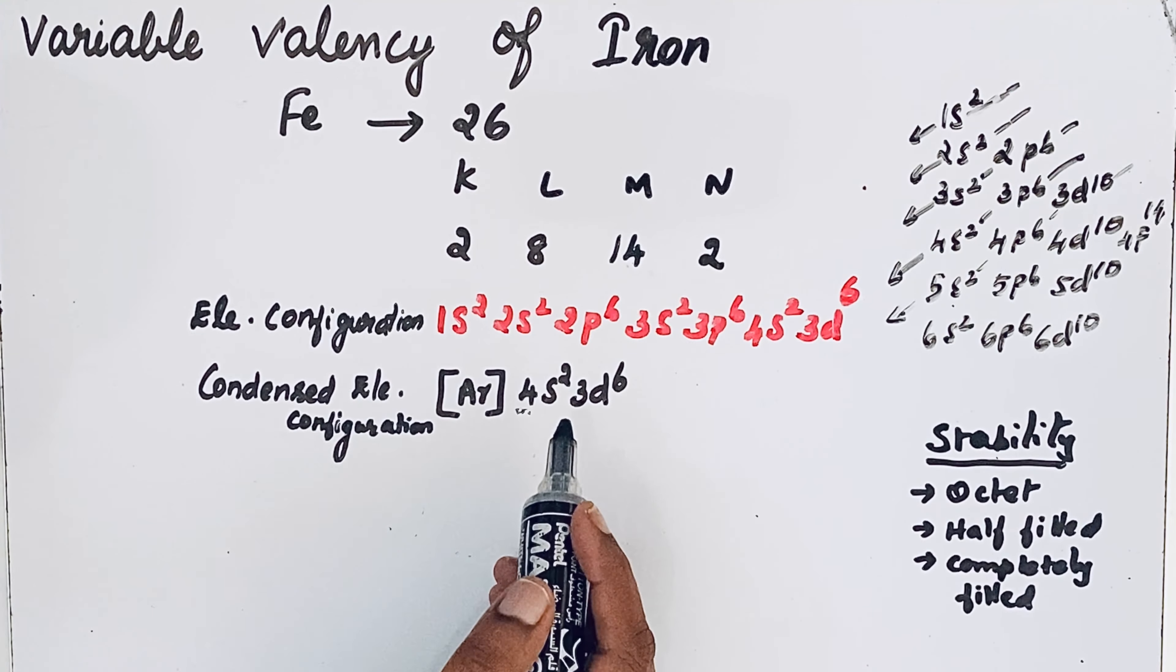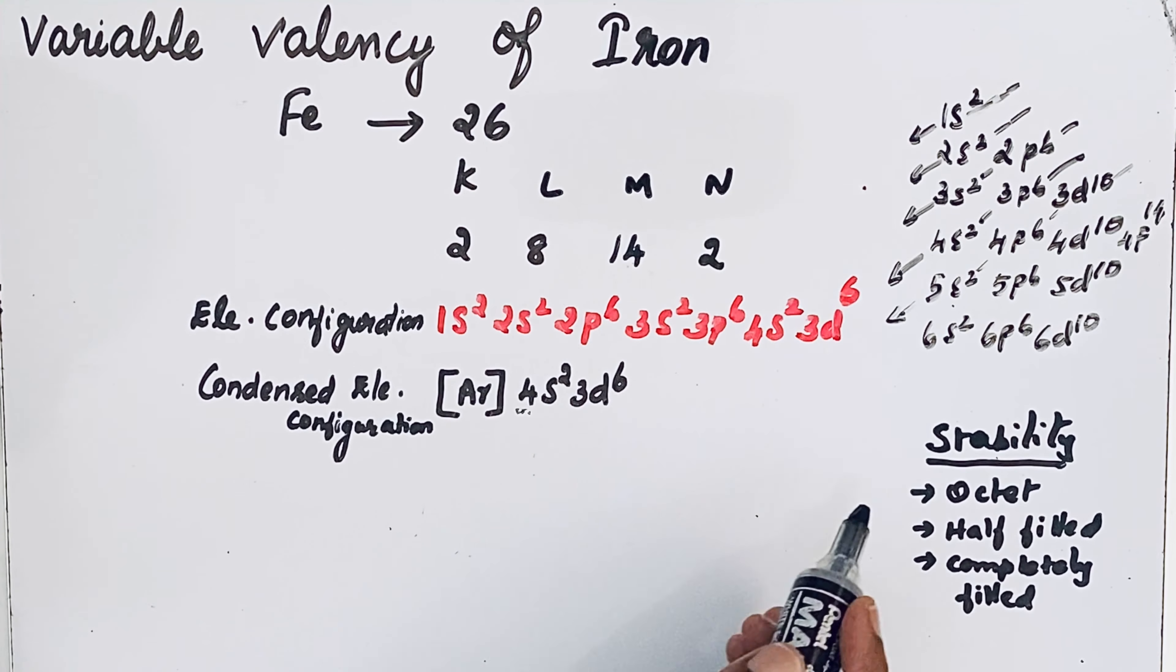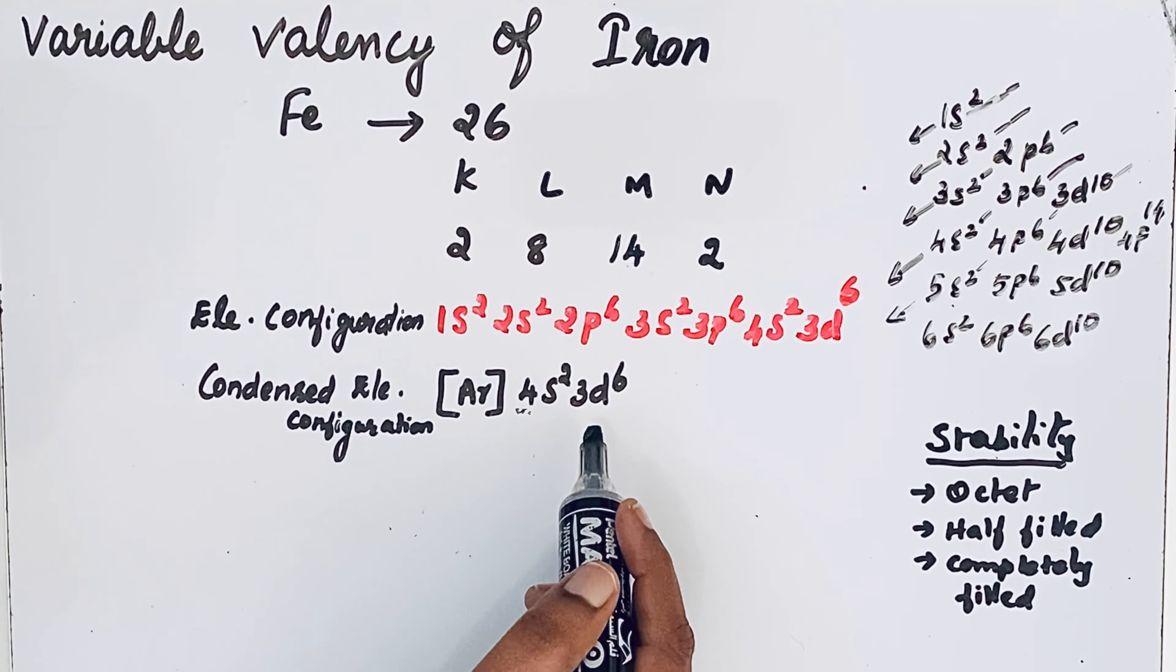Why do atoms combine with other atoms? To get stability. Not only octet configuration, but half-filled orbitals and completely filled orbitals also give extra stability for atoms of an element.